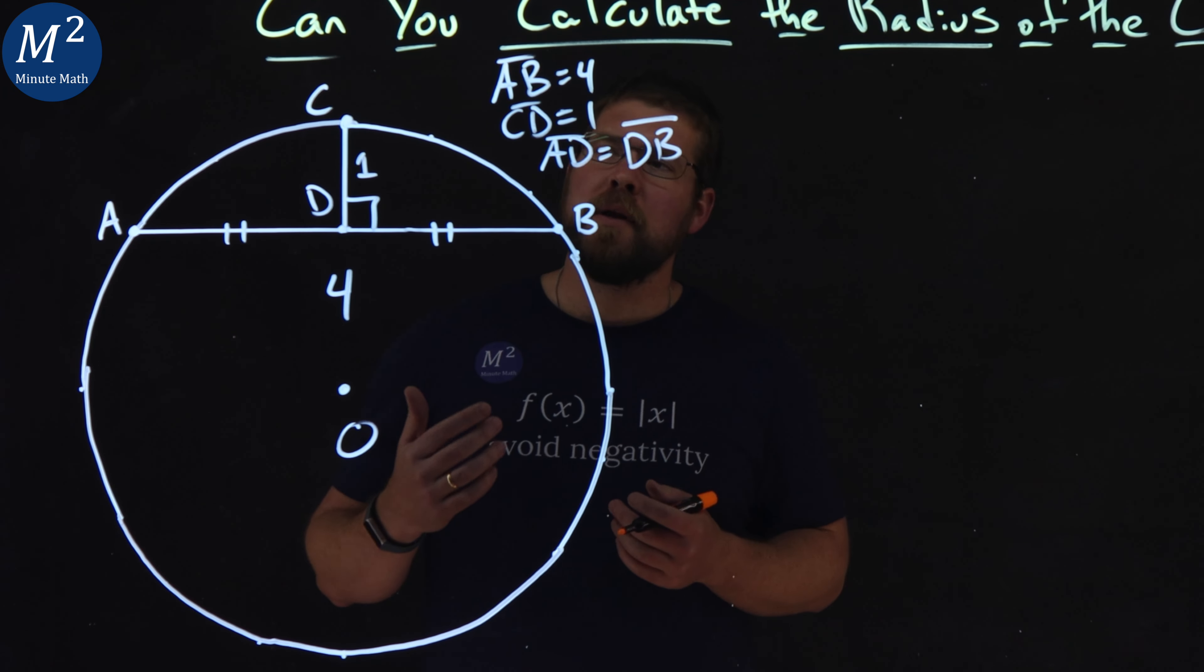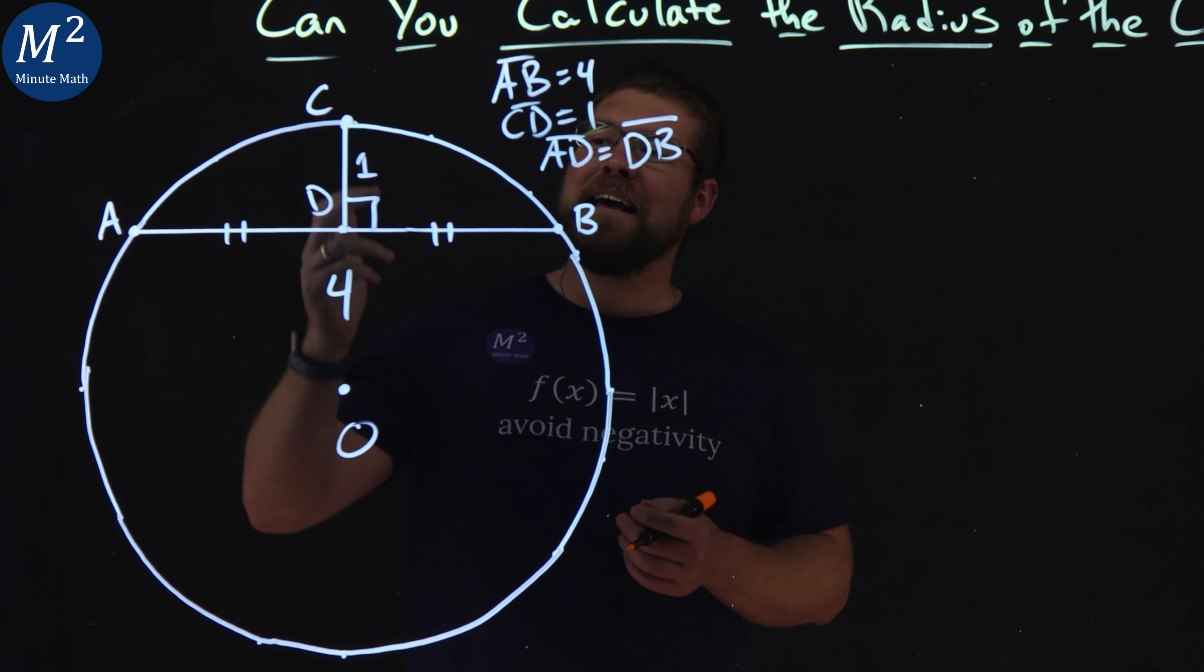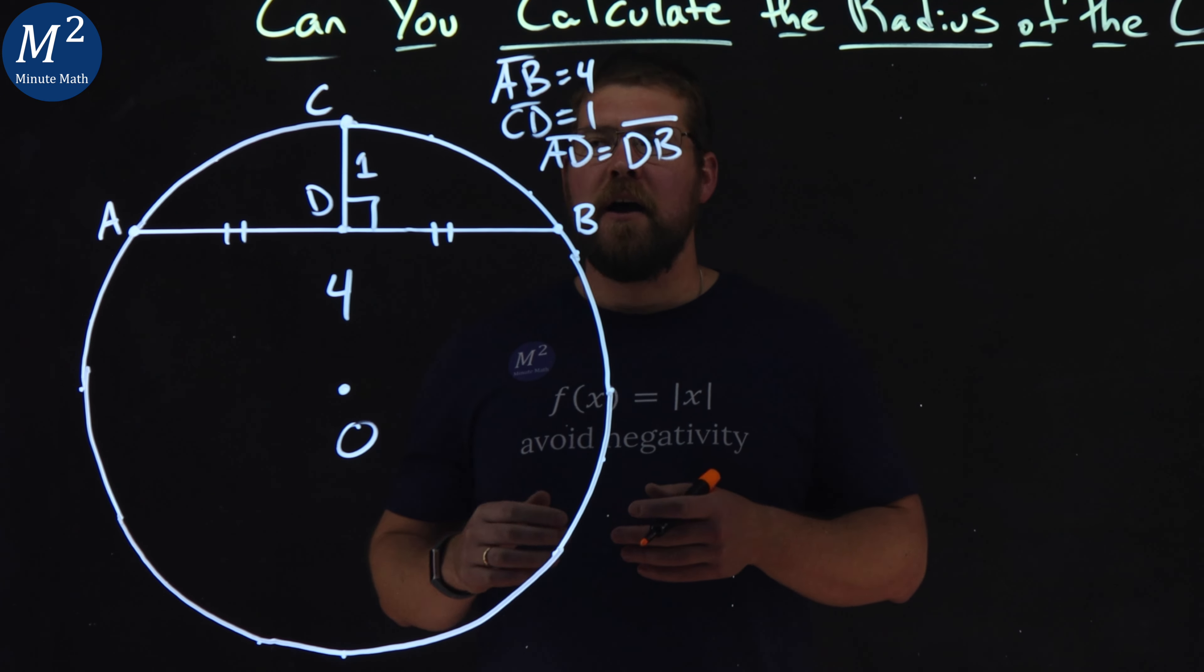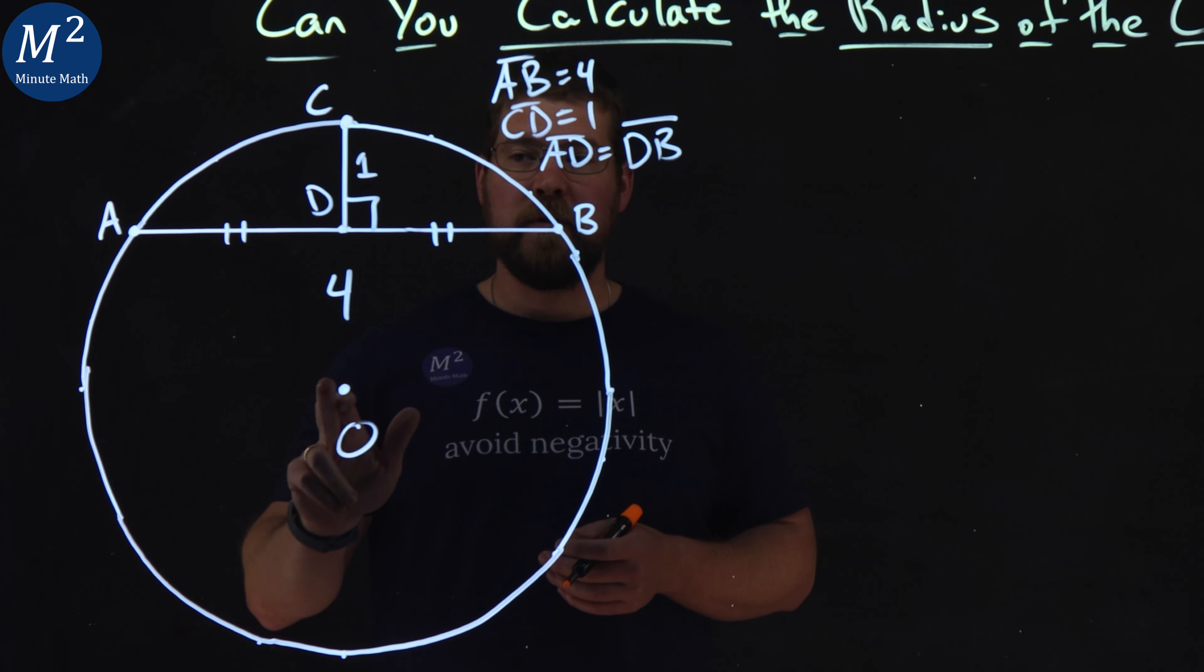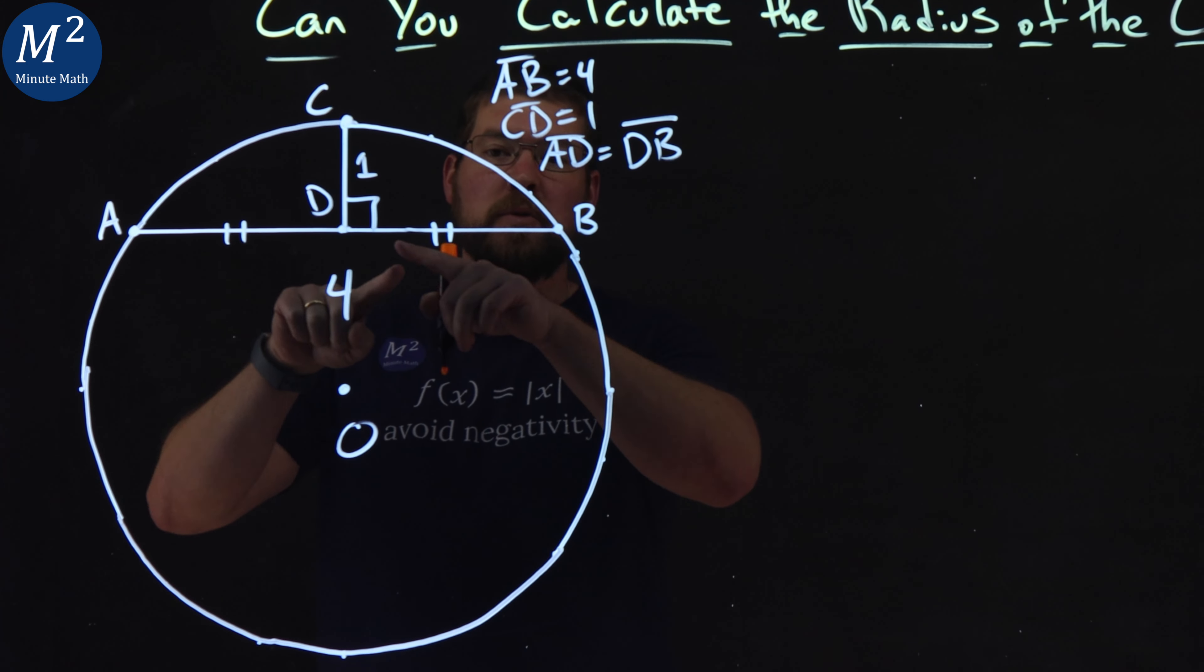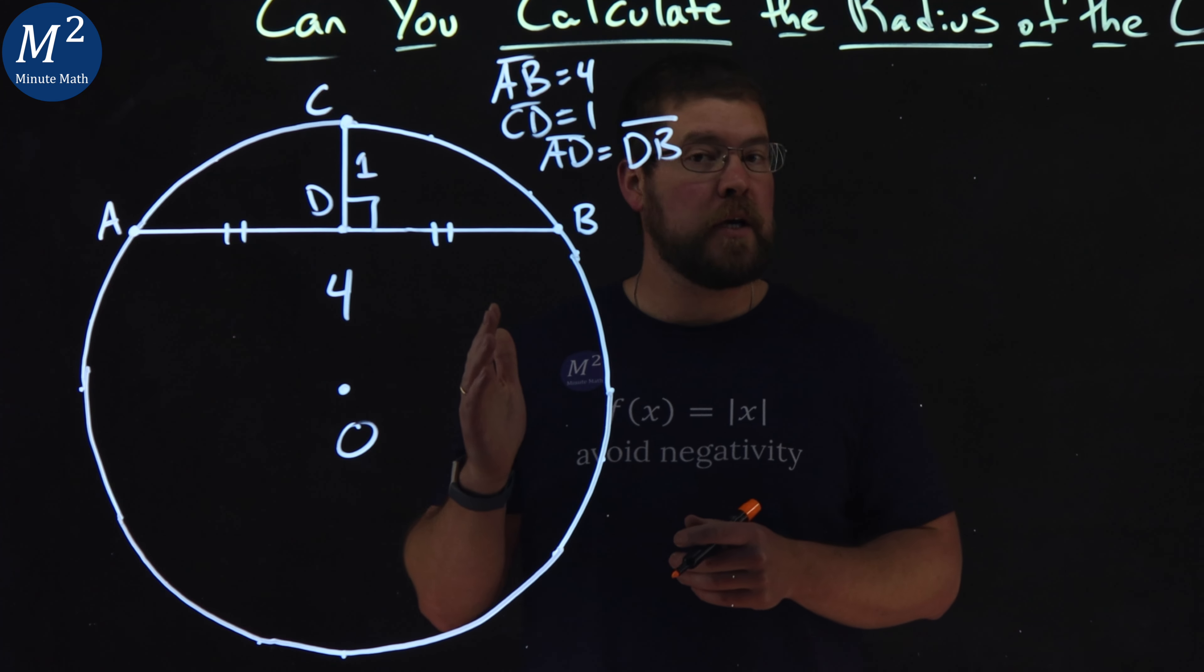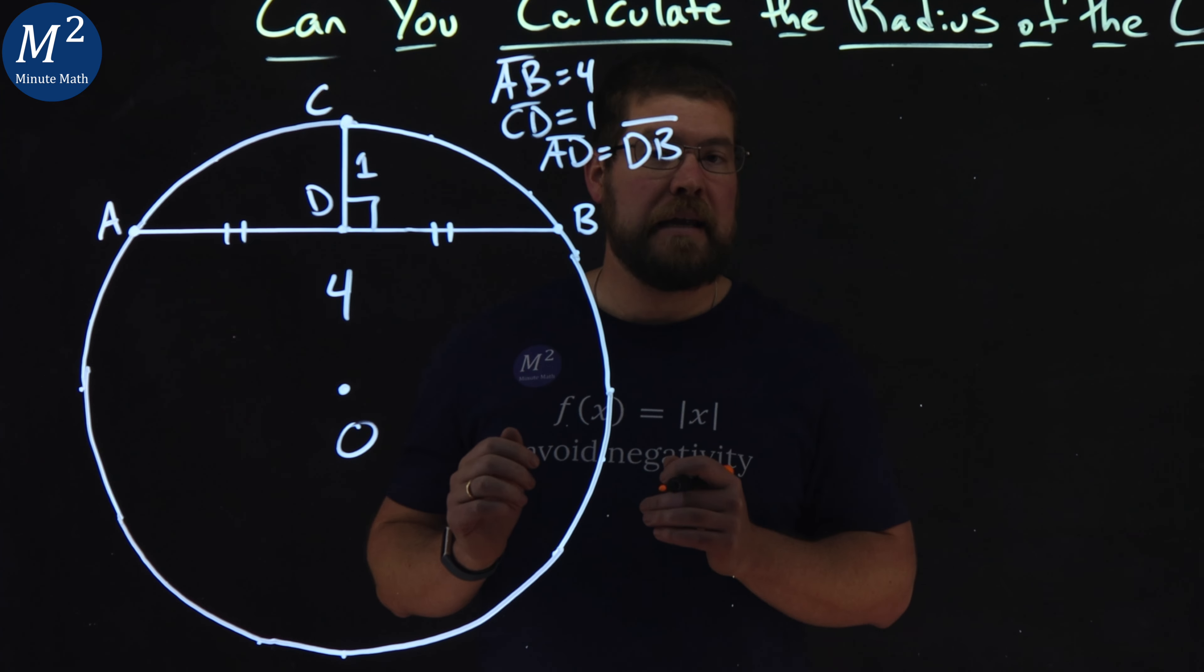One thing I want to note is talking about this chord AB and the segment CD. If the segment CD or radius, if it continued onto the circle, if that is perpendicular to a chord and cuts it in half, those things happen vice versa.